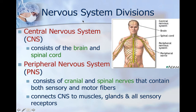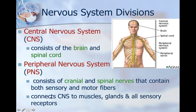The divisions of the nervous system include the central nervous system — central because it's centrally located in the body — it consists of the brain and the spinal cord. Then we have the peripheral nervous system; this is stuff that moves outside to the periphery from the center. It consists of your cranial nerves and the spinal nerves, they have both sensory and motor fibers, and it connects the central nervous system to the muscles, glands, and all sensory receptors.